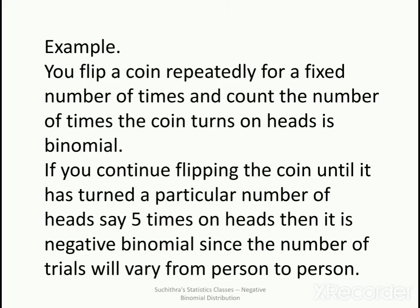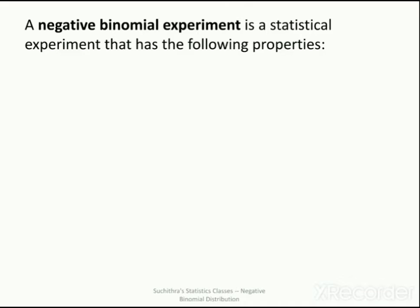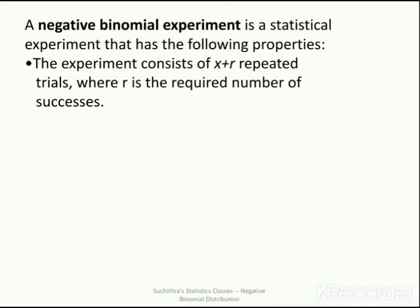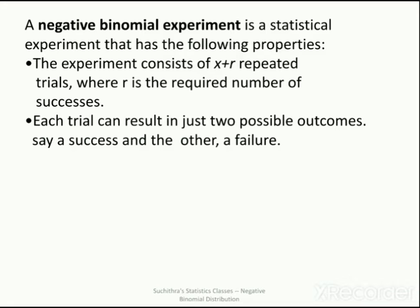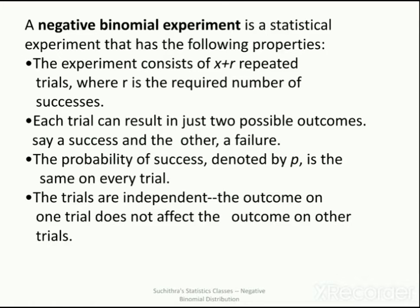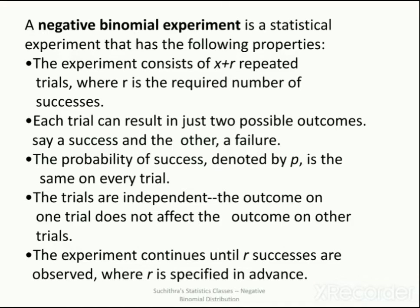A negative binomial experiment has the following properties: the experiment consists of x plus r repeated trials, where r is the number of successes. Each trial can result in just two outcomes — success or failure. The probability of success p is the same on every trial. The trials are independent. The experiment continues until r successes are observed, where r is specified in advance.